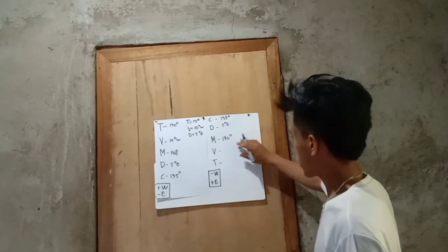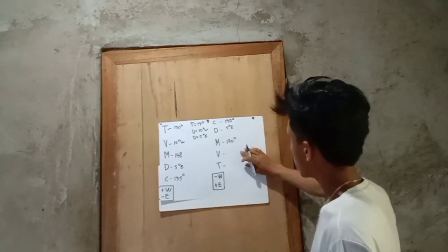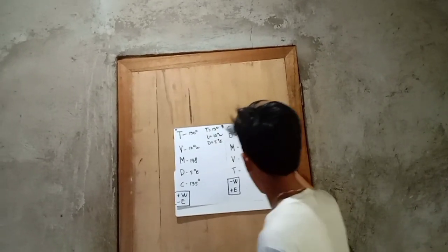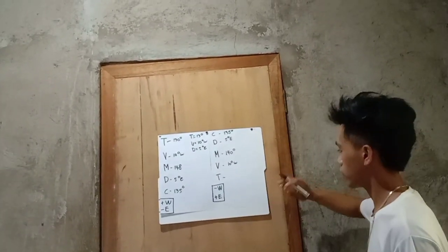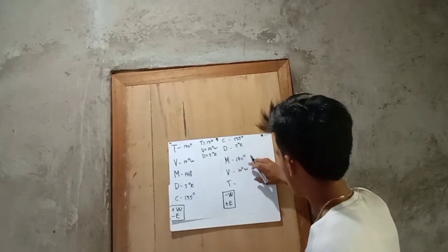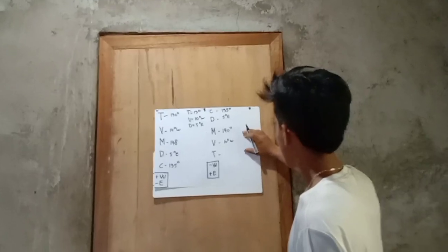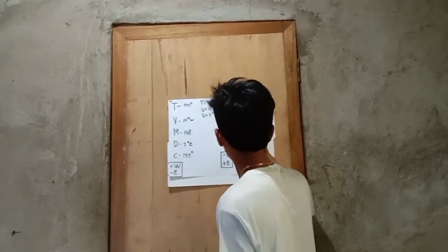So, next is variation equals 10 degrees west. So, apply the golden rule, it is subtract. 140 degrees subtract 10 degrees west equals 130 degrees.